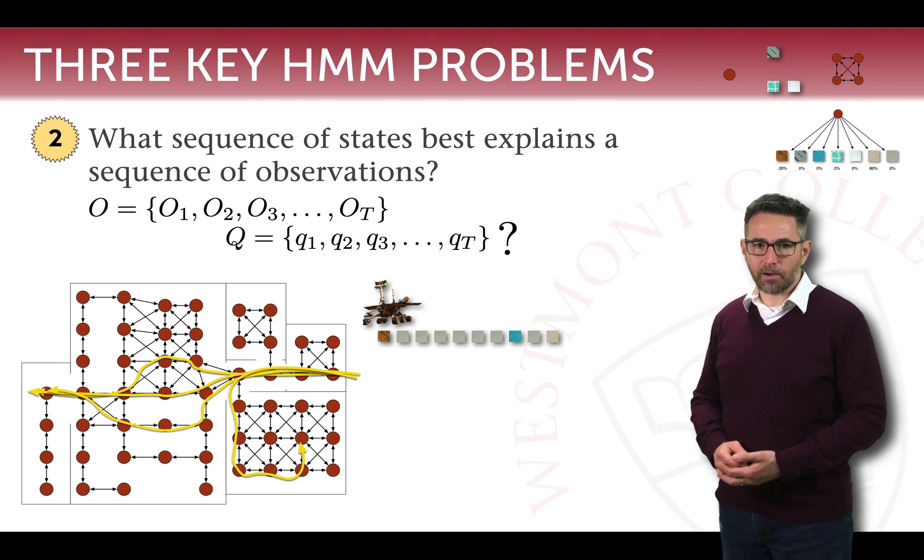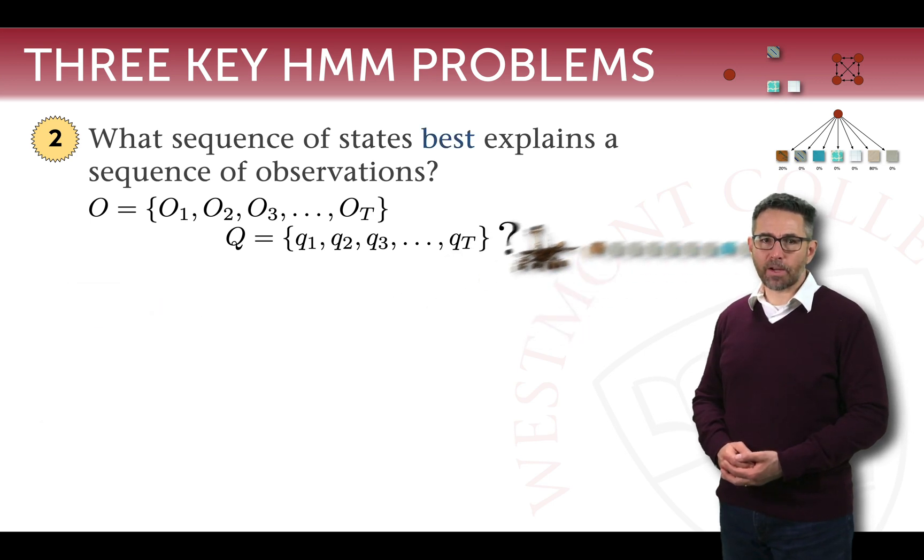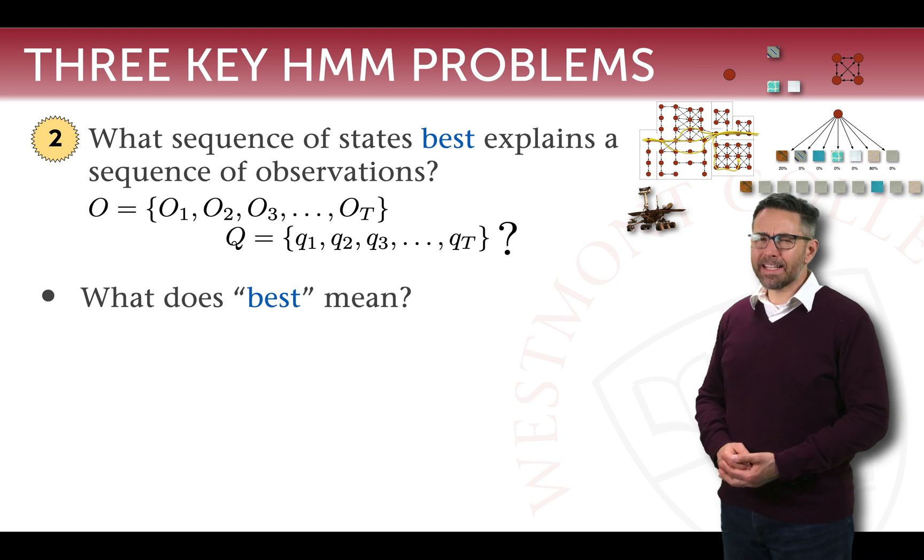How do we figure out what is the best sequence of states to explain that given the model that we have? That's the second question. The first thing we have to ask is what exactly do we mean by best?